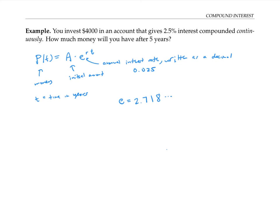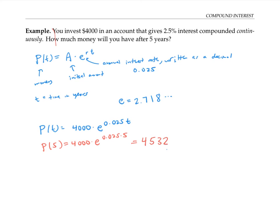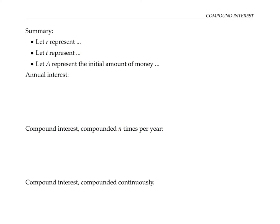So in this problem, we have p(t) equals 4,000 times e to the 0.025t. After five years, we'll have p(5), which is 4,000 times e to the 0.025 times five, and that works out to $4,532.59 to the nearest cent.